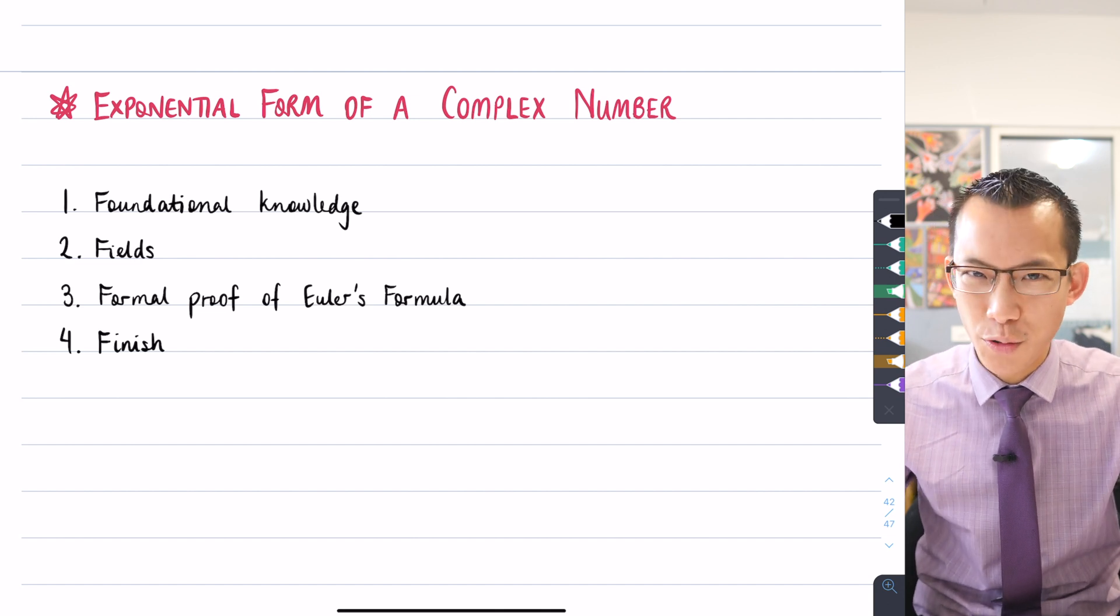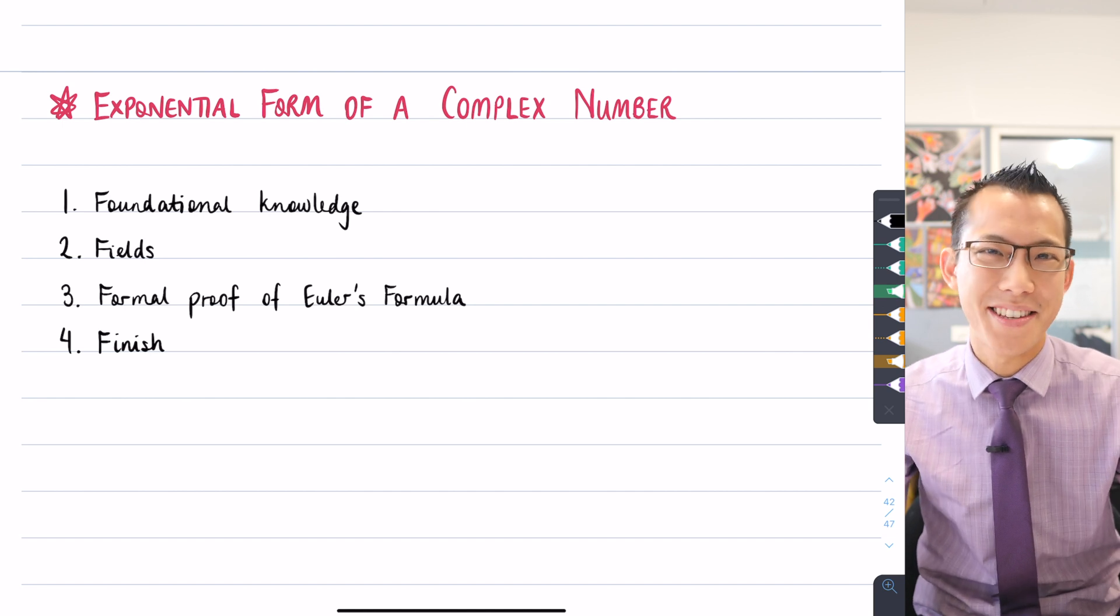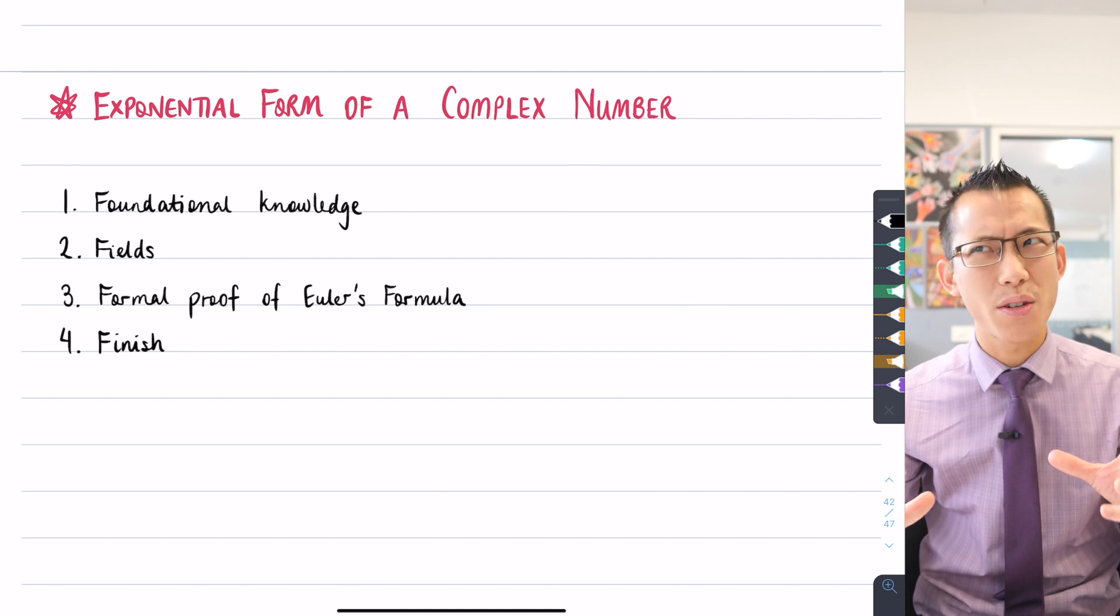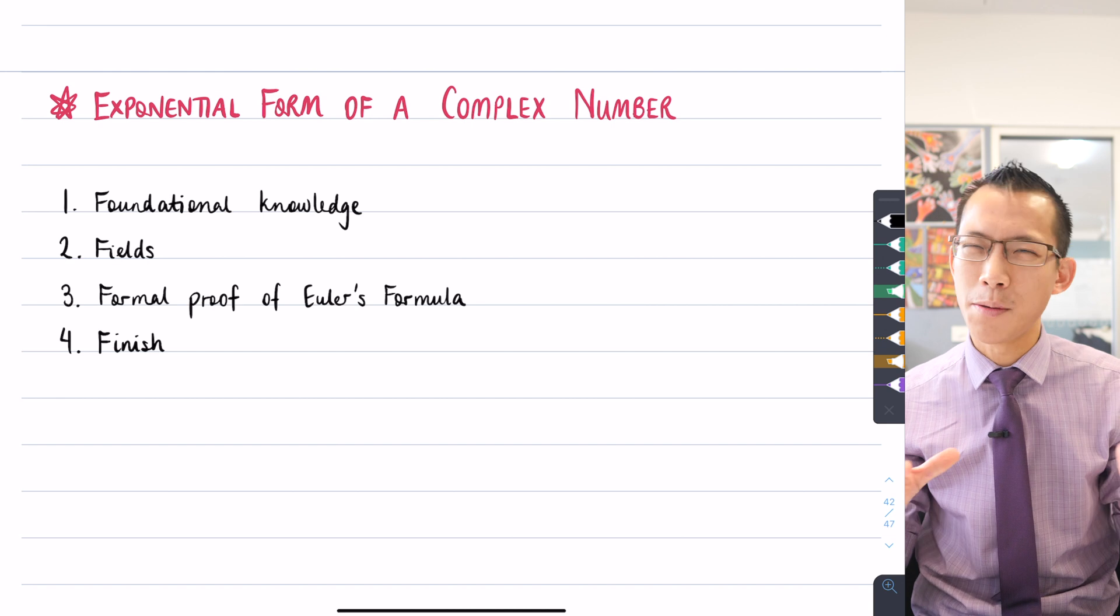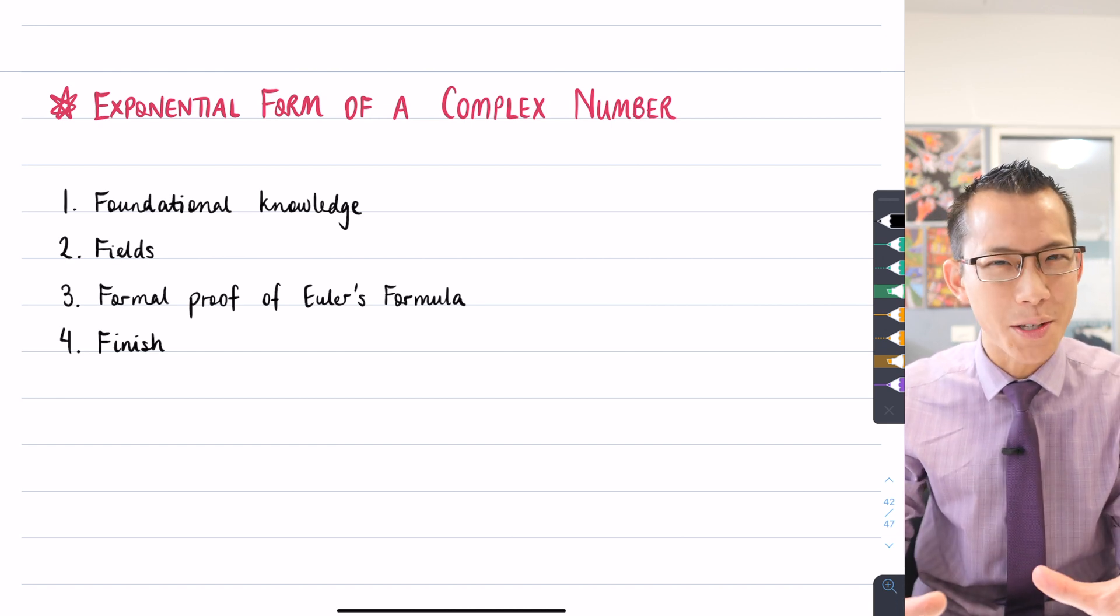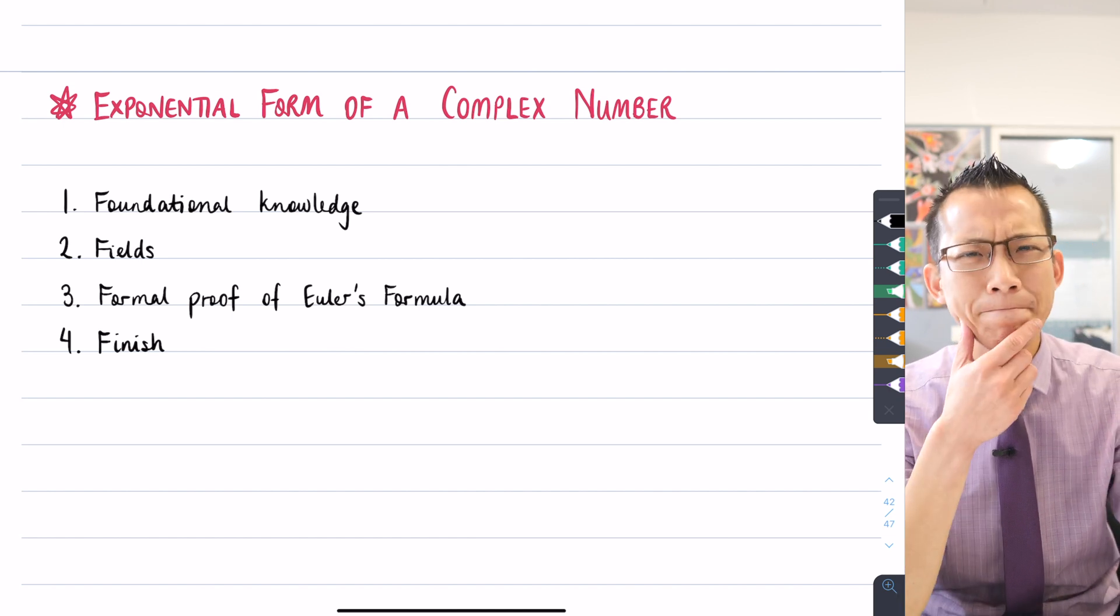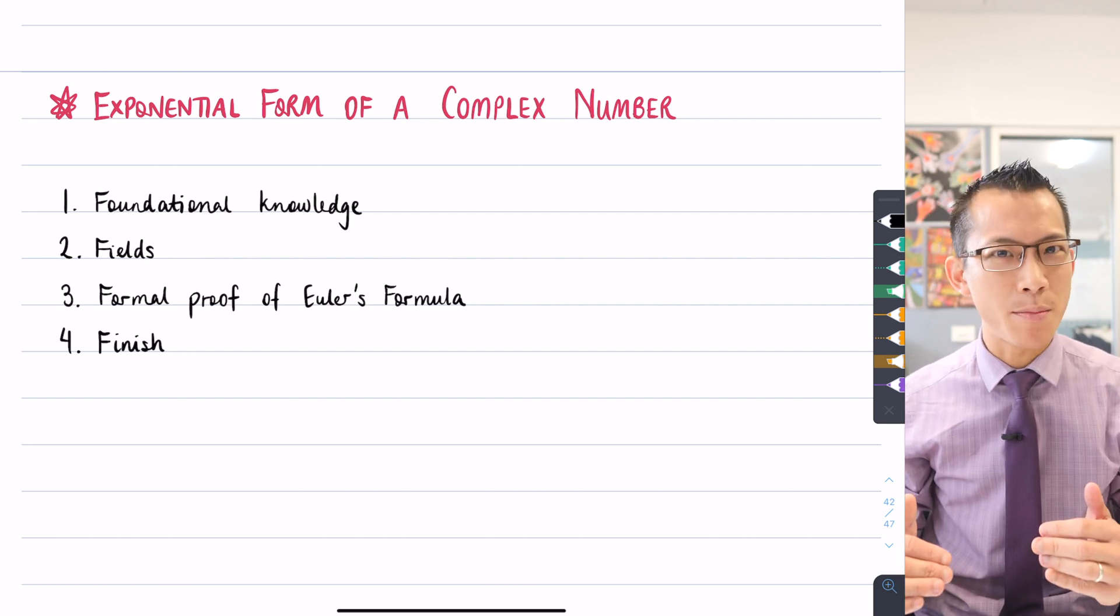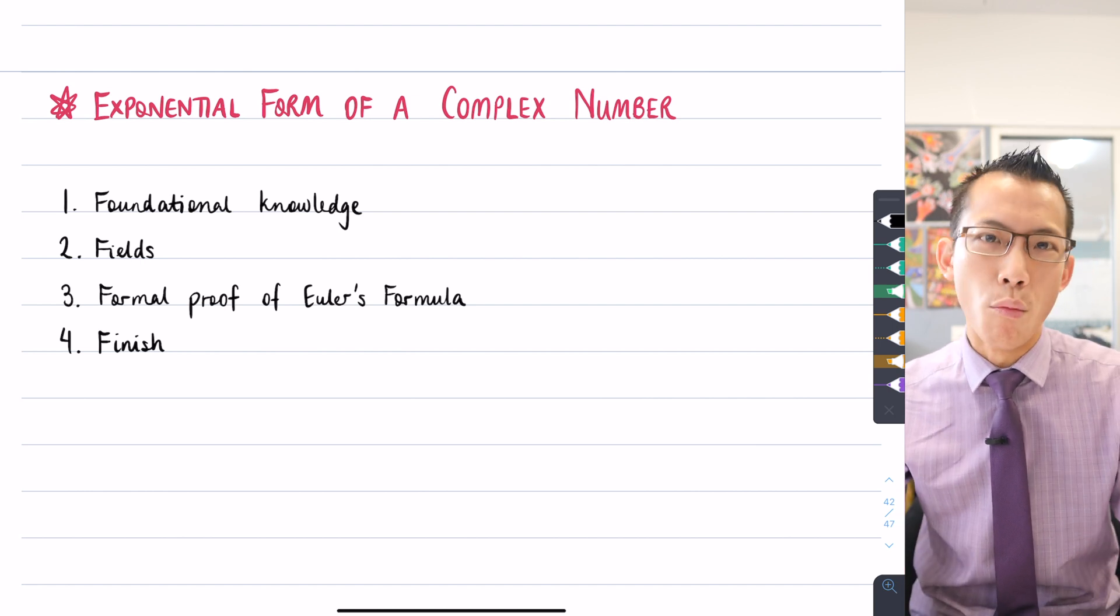Today we're going to have a look at the exponential form of a complex number. Now this little pearl of mathematics is something we introduced last lesson, but you might recall that we actually did sort of an informal proof and it's kind of what we refer to as a bit hand wavy. There were some bits where it was kind of like, oh, just trust me and you'll see why this is going to make sense in the end. But if you're an inquisitive person, you might be thinking, hmm, I'm not 100% sure or 100% convinced that all of the logic in the argument was completely watertight and that's because it was an informal proof.